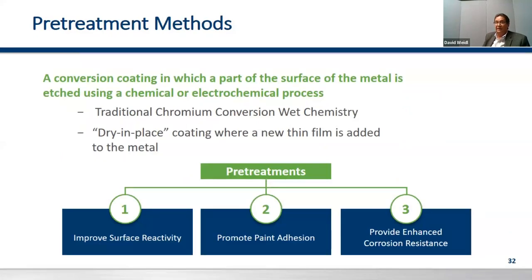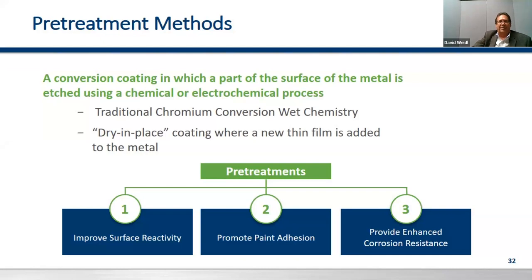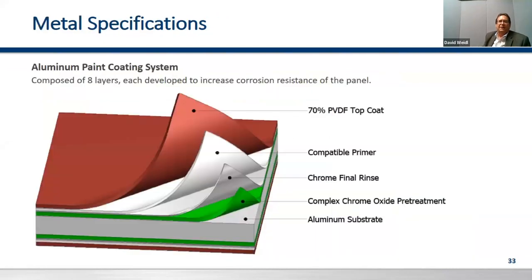On pre-treatment, there are two types available. The original is traditional chromium conversion — considered wet chemistry — which allows a tighter bend radius and provides enhanced corrosion resistance. There's also a dry-in-place coating, a new thin film added to the coil before it goes through the process. In the cross-section, you've got your base metal, complex chrome pre-treatment at about 0.2 to 0.25 mils, a chrome rinse, a compatible primer, and then your 70% PVDF topcoat.